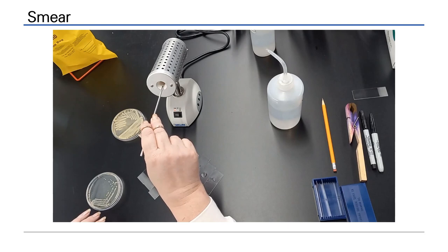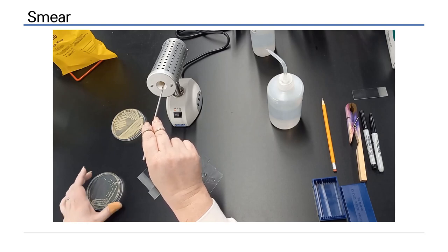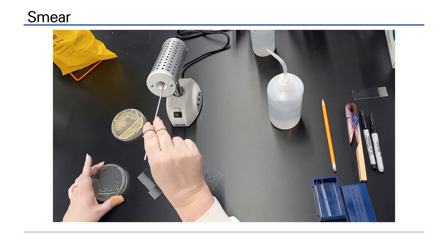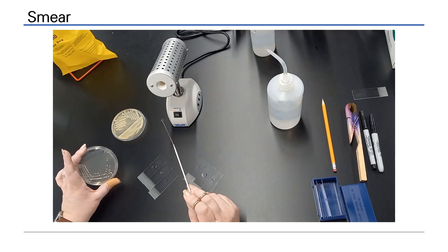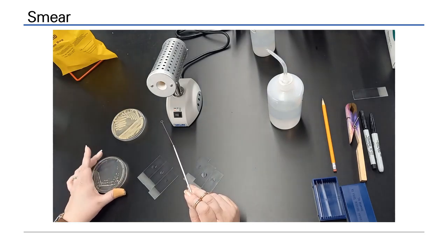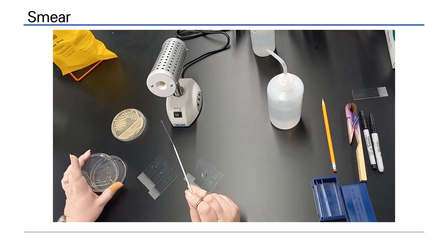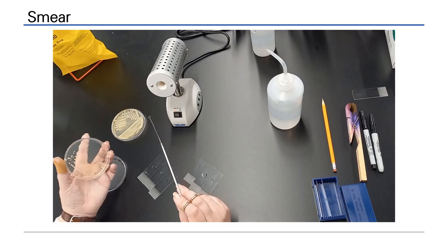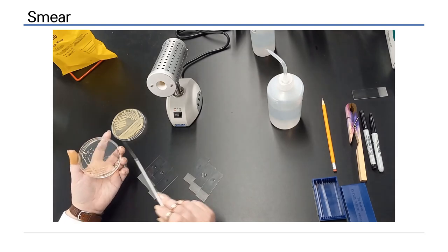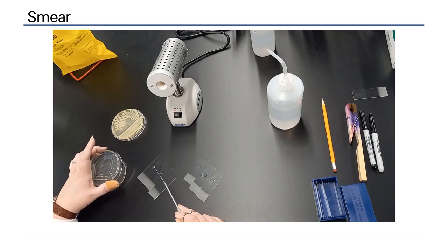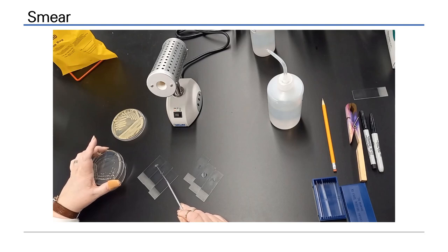Sterilize your loop. Cells will be removed from the plate and re-suspended in each drop of water. Pick an isolated colony to ensure purity. The loop may be touched to a sterile region of the plate to ensure that it has cooled. Pick a single colony. Remember this contains millions of cells and is more than adequate to produce a smear.